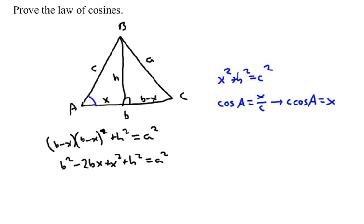Now, if I make a couple substitutions, I'll be left with the law of cosines. First of all, right here, x squared plus h squared, that's this quantity up here. That's equal to c squared.